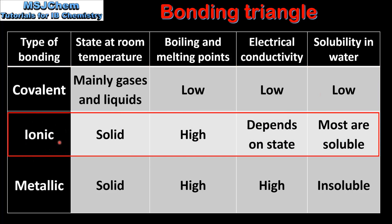Compounds with Ionic Bonding are usually Solids at Room Temperature and generally have High Boiling and Melting Points. The electrical conductivity depends on the state — it is Low when Solid and High when Molten or in Aqueous Solution. Most Ionic Compounds are Soluble in Water.